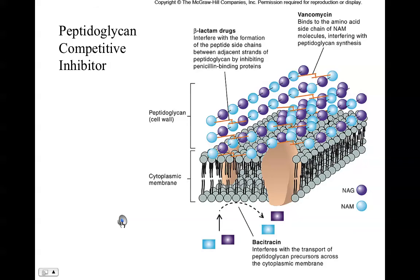Here are several examples, including penicillin, of peptidoglycan synthesis inhibitors. The beta-lactam drugs, in which we find penicillin and the penicillin semi-synthetic derivatives, are going to inhibit the cross-linking used to stabilize the structure of peptidoglycan. Bacitracin interferes with the transport of peptidoglycan precursors across the cytoplasmic membrane, and vancomycin binds to amino acids used in the construction of peptidoglycan. All three — bacitracin, vancomycin, and the beta-lactam drugs like the penicillins — are collectively called cell wall inhibitors.